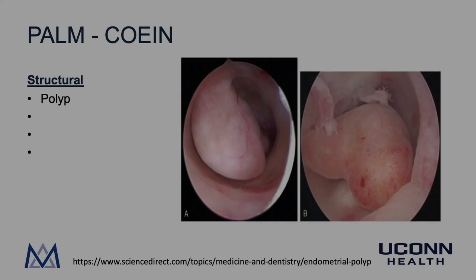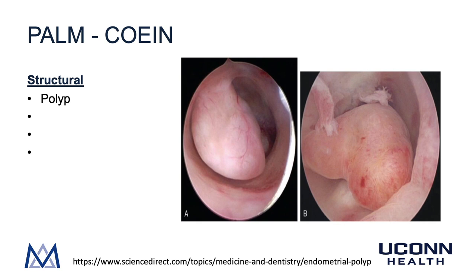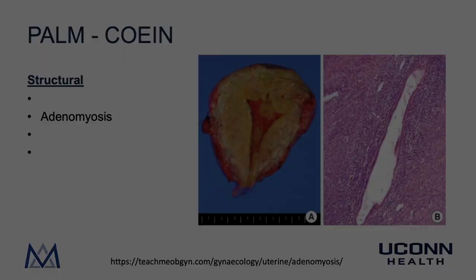On the structural side, the P in PALM stands for polyp. Polyps are most commonly endometrial polyps, but also can be endocervical polyps. They are benign growths that come from the glandular epithelium of the endometrium or endocervix, and commonly have a fibrovascular stalk and a fleshy tip. These polyps can bleed very heavily during menses. In the photographs to the right are two classic pictures of endometrial polyps as seen at the time of hysteroscopy.